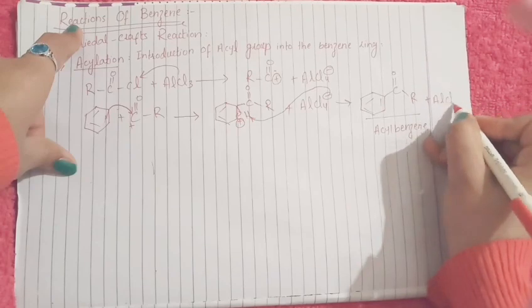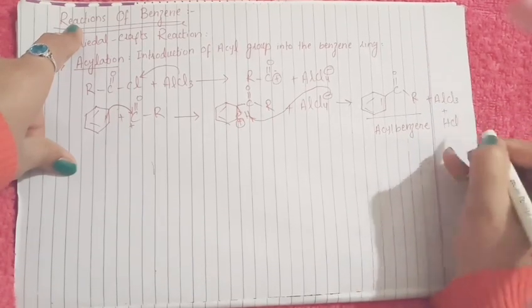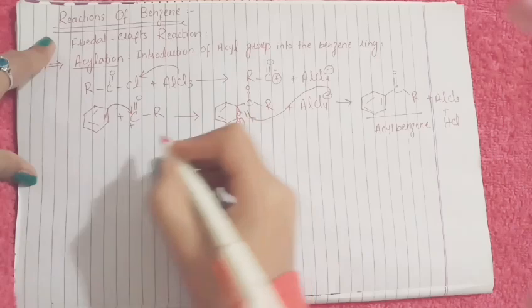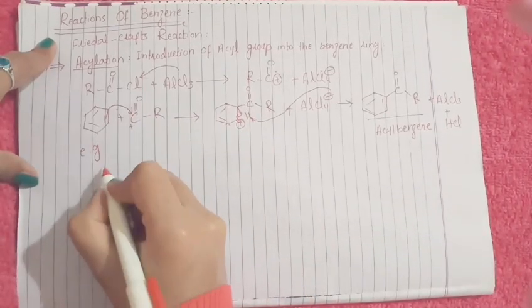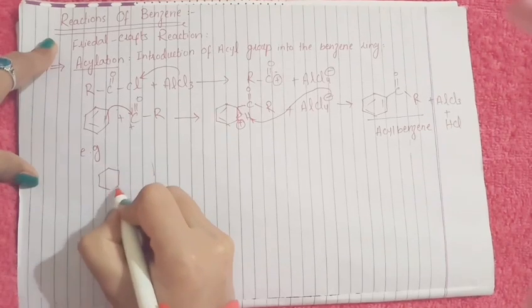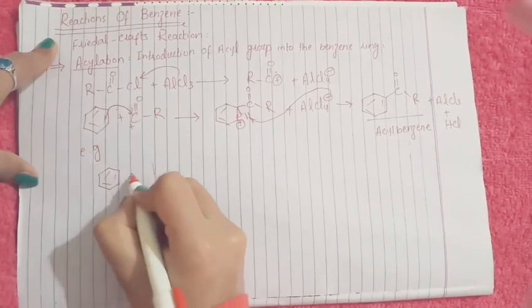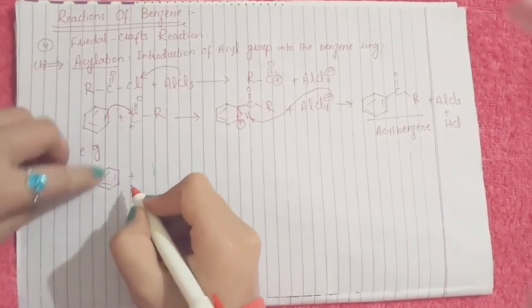Plus AlCl3 plus HCl. For better understanding, I'm giving you an example for this acylation in which we have a benzene ring.